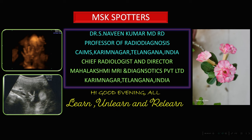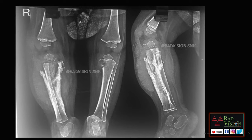Good evening all, welcome to this new session. We will try to see some interesting MSK spotters which are useful in viva, short cases, and exams. Coming to the first case, a child presented with swelling in the right leg. There is diffuse osteitis, periosteitis with chronic osteomyelitis in the tibia and fibula on the right leg.